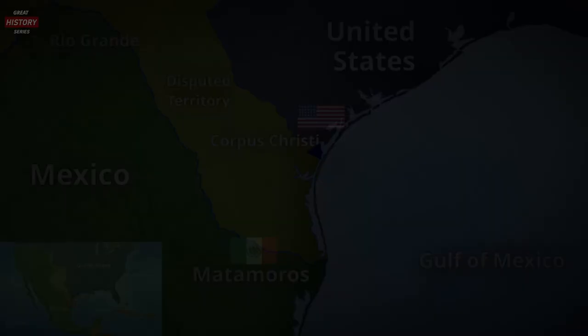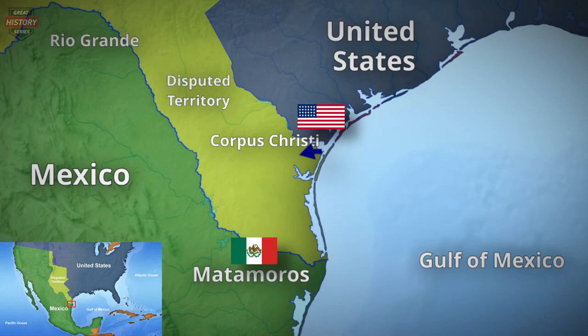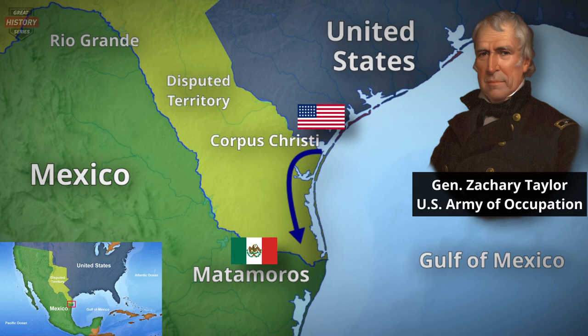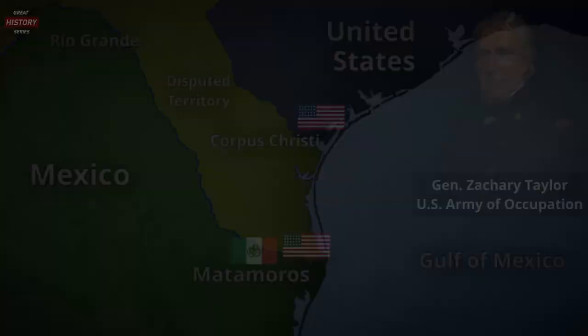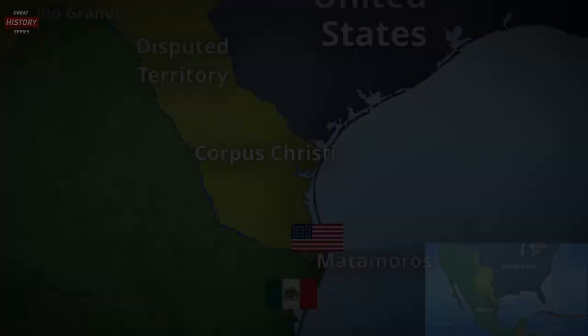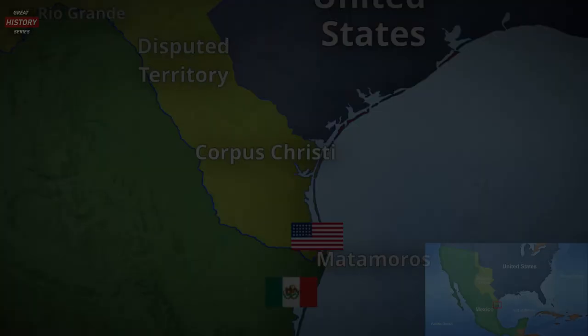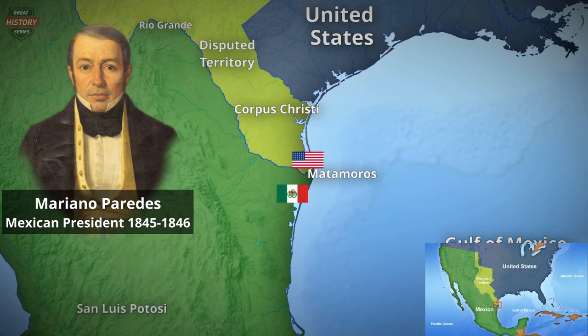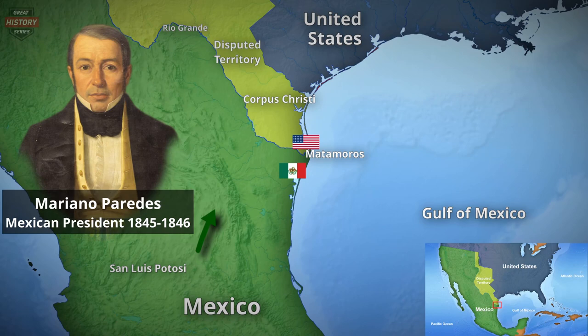To force the Mexicans to the negotiation table, James Polk decided to increase the pressure on the Mexican government. Polk instructed Zachary Taylor to move his forces deeper into the disputed territory, certain this additional pressure would intimidate Mexico or at least provoke Mexico to attack the American army. On March 28, 1846, the Army of Occupation reached the north shore of the Rio Grande and a few days later started the construction of a star-shaped earthwork, later known as Fort Texas. Despite the American pressure, Mexican president Mariano Paredes refused to negotiate and instead sent reinforcements to the Army of the North. Paredes ordered General Mariano Arista to defend Matamoros and expel the American Army of Occupation from the disputed territory.